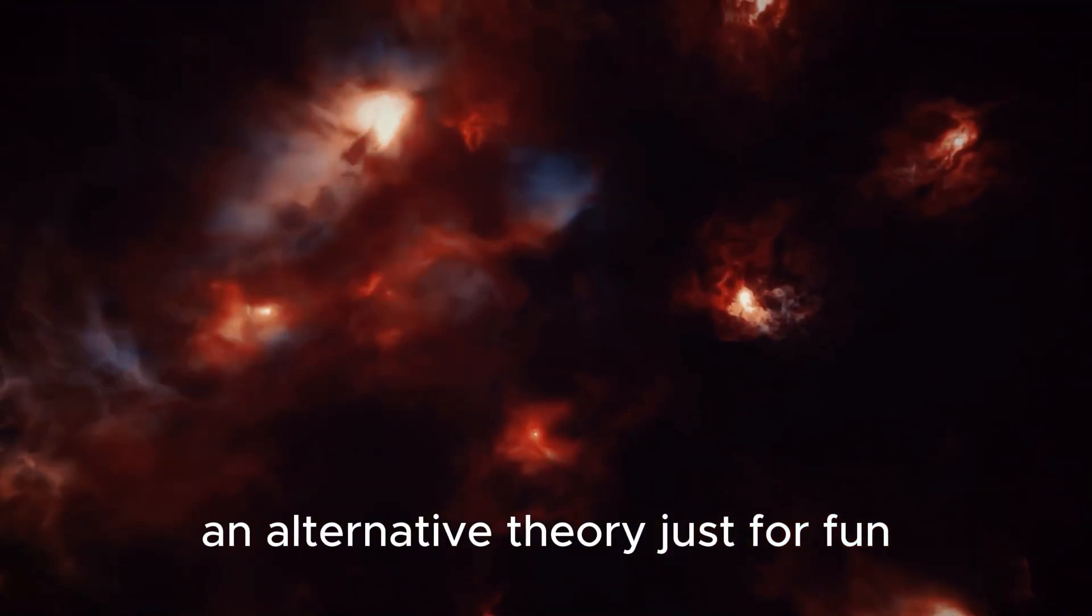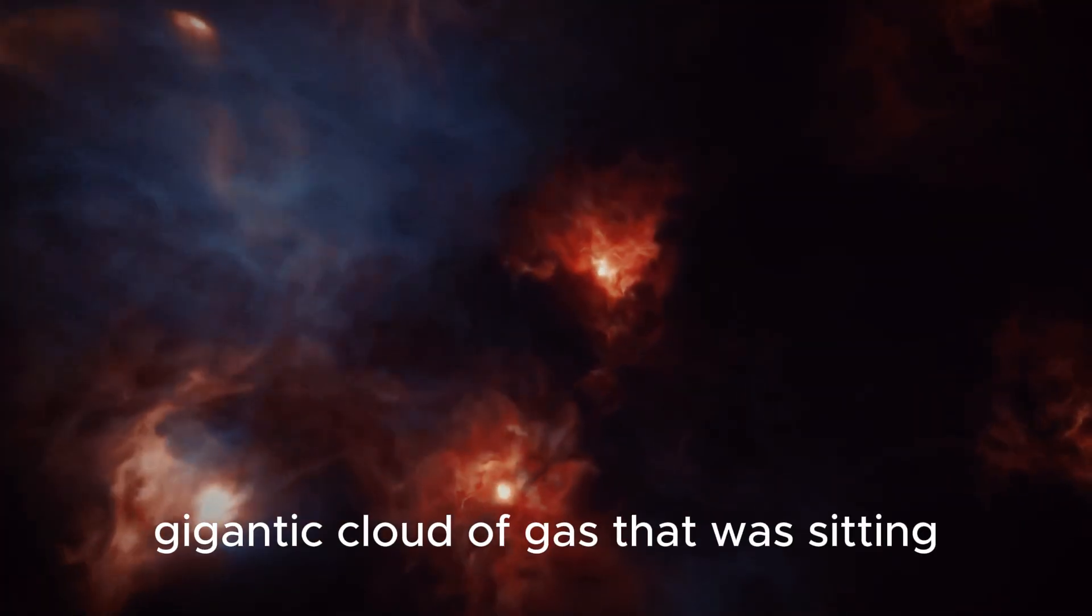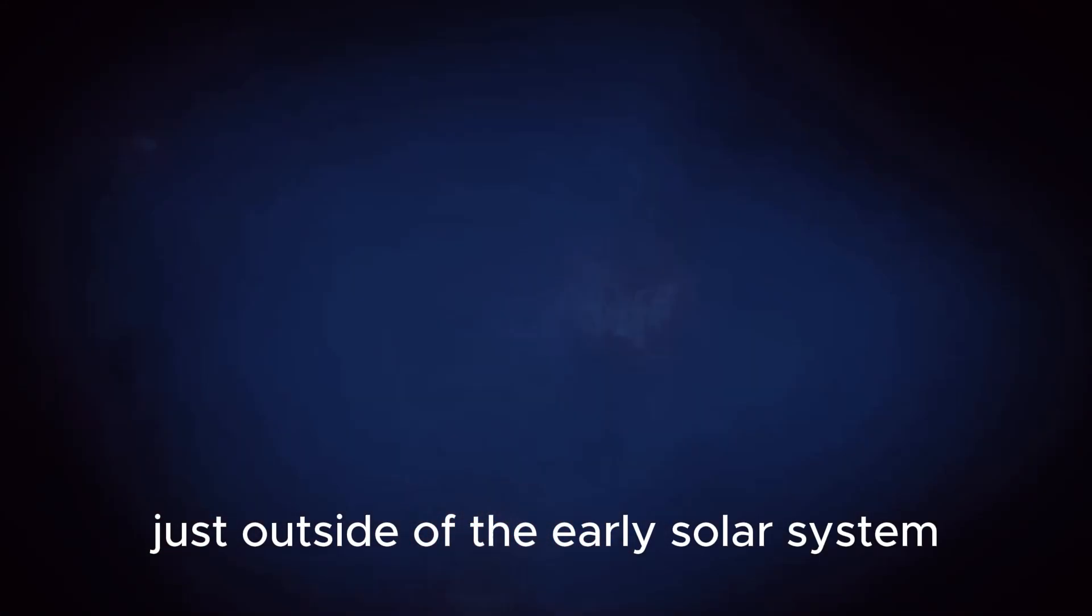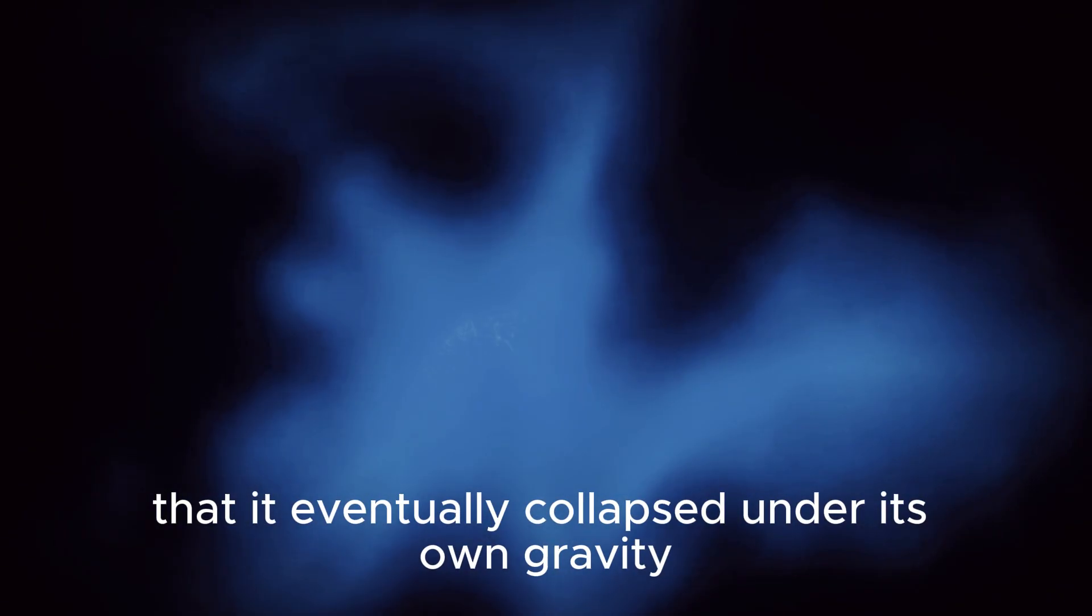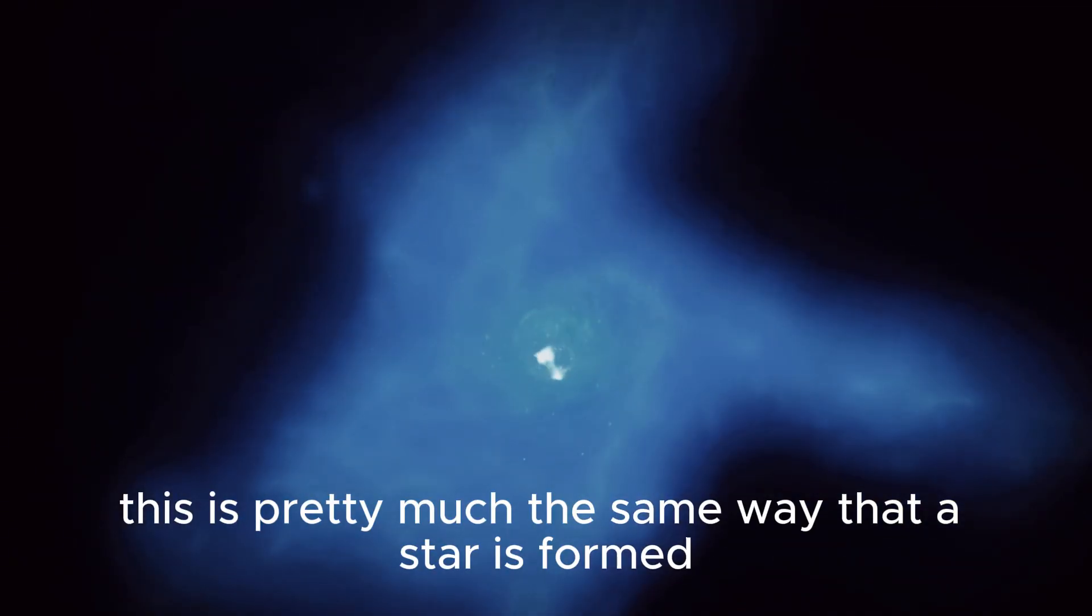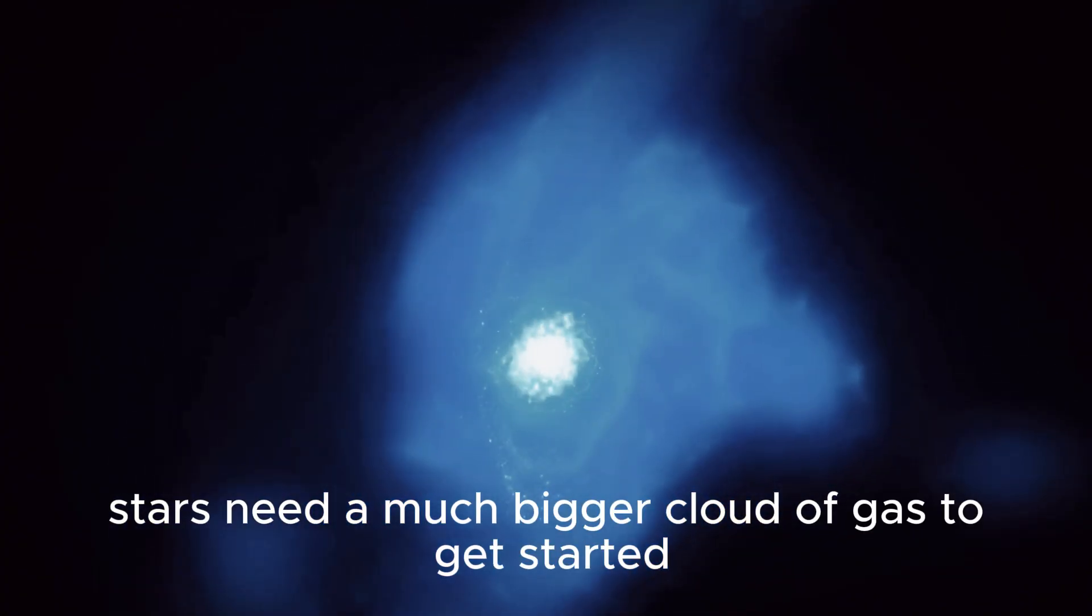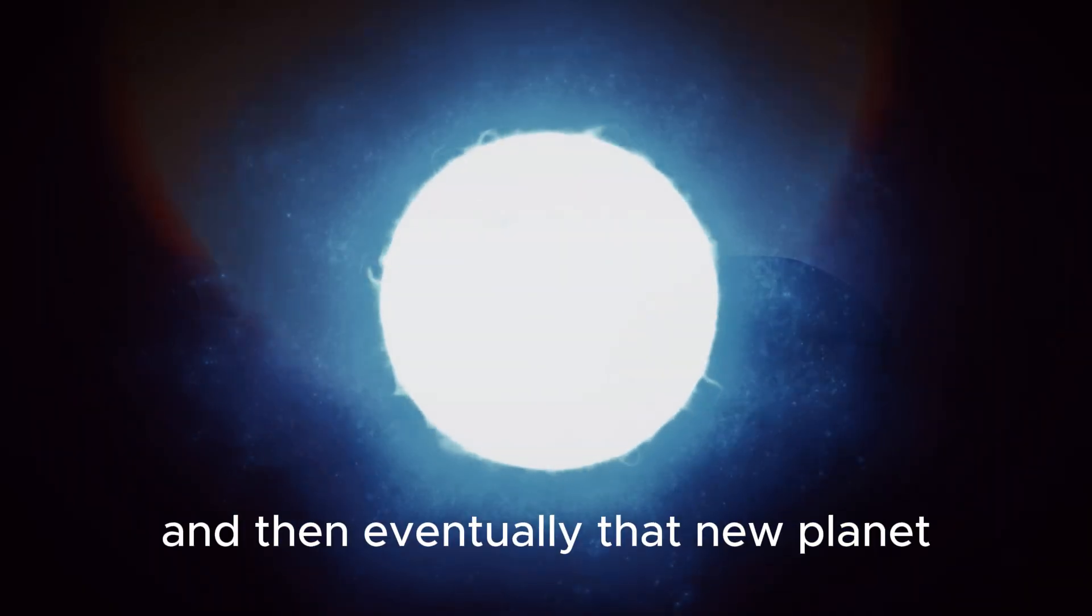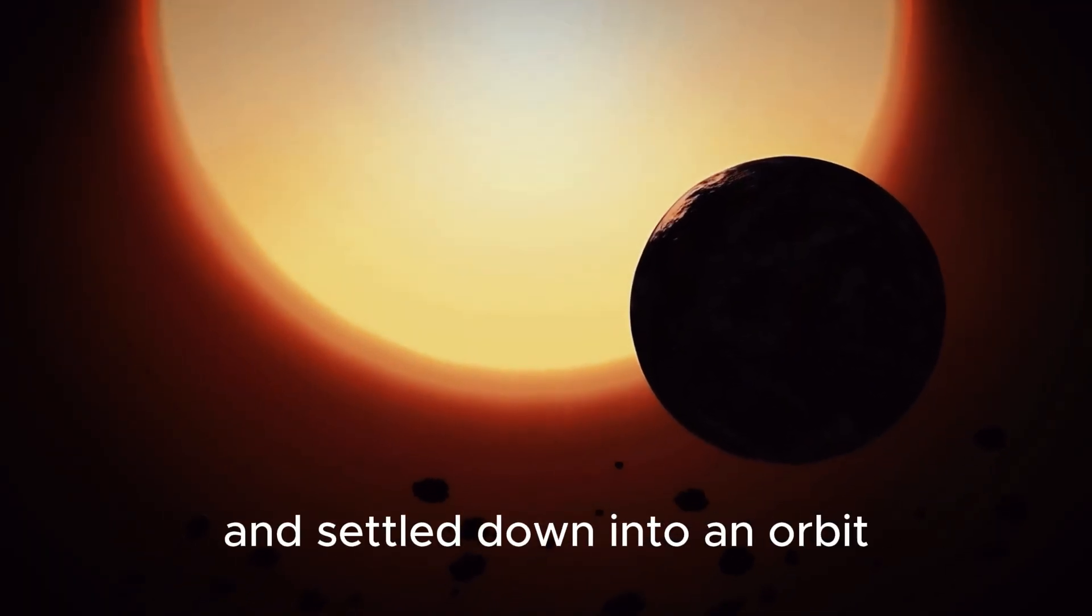An alternative theory, just for fun, is that Jupiter actually started its life as a separate gigantic cloud of gas that was sitting just outside of the early solar system. Over time, that cloud got so big that it eventually collapsed under its own gravity and formed into a dense ball of gas. This is pretty much the same way that a star is formed, only stars need a much bigger cloud of gas to get started. So, in this case, you just get a really big planet. And then, eventually, that new planet got pulled in by the gravity of the sun and settled down into an orbit.